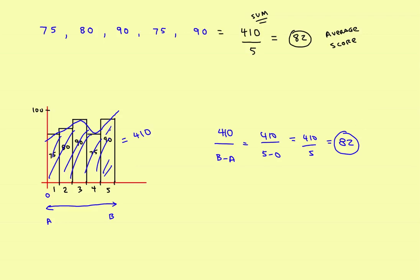Visually, if you put a horizontal line across the graph at 82, that line gives you the average score. It's like you made an 82 on five consecutive tests.